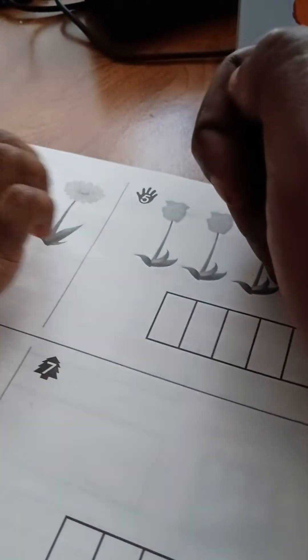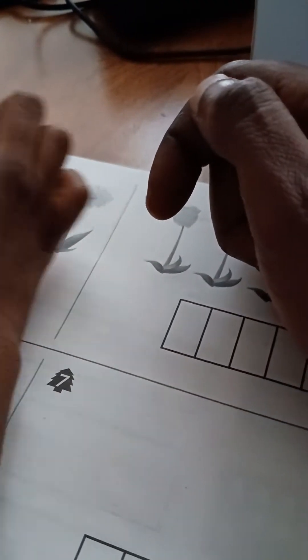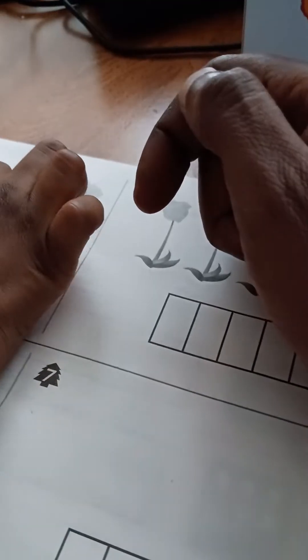You got to color how many more boxes? How many flowers is up there? Two. Huh? Two. Count the flowers. I'm playing with you. One, two, three, four.